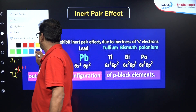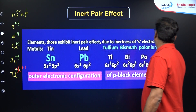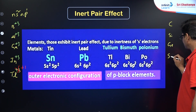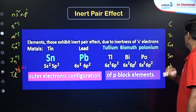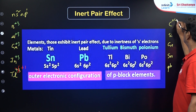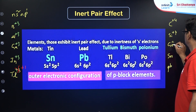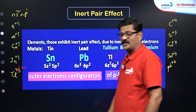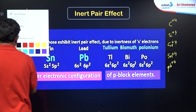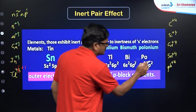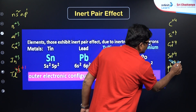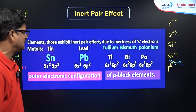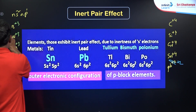Similarly, in group 14 elements — carbon, silicon, germanium, tin, and lead — they show a +4 oxidation state. But lead does not show a +4 oxidation state; rather, lead shows a +2 oxidation state due to the inert pair effect. In its +2 oxidation state, lead forms stable compounds.